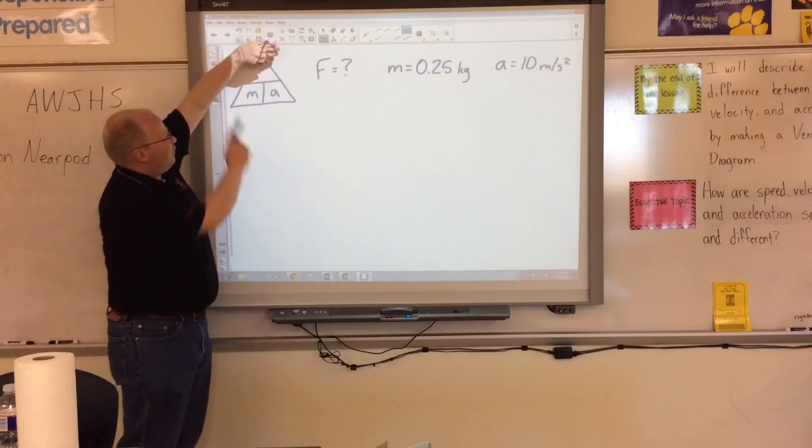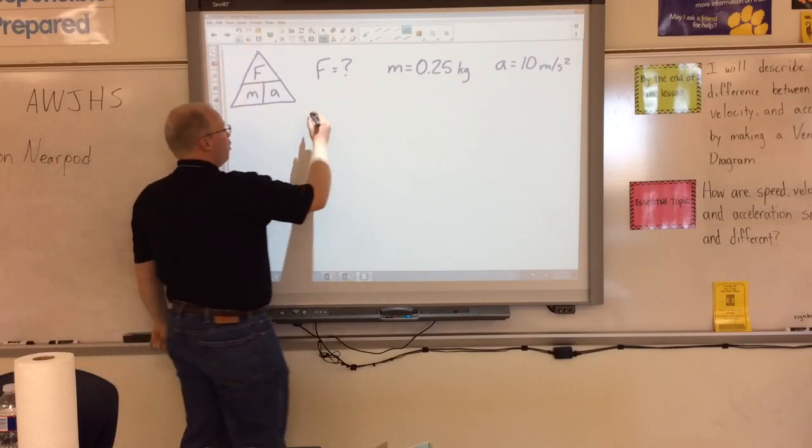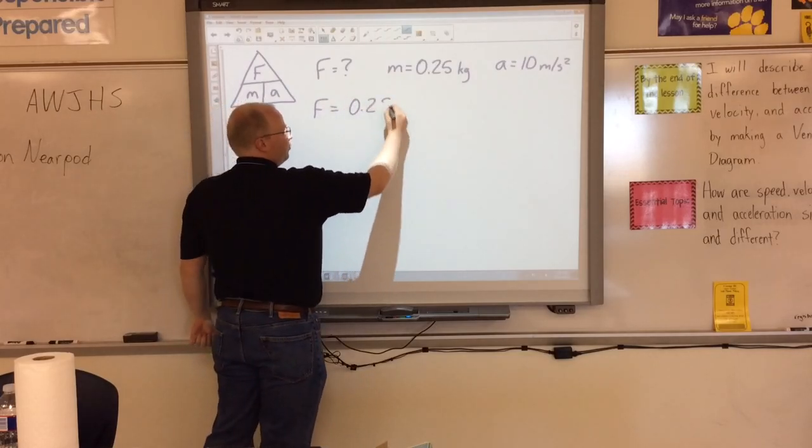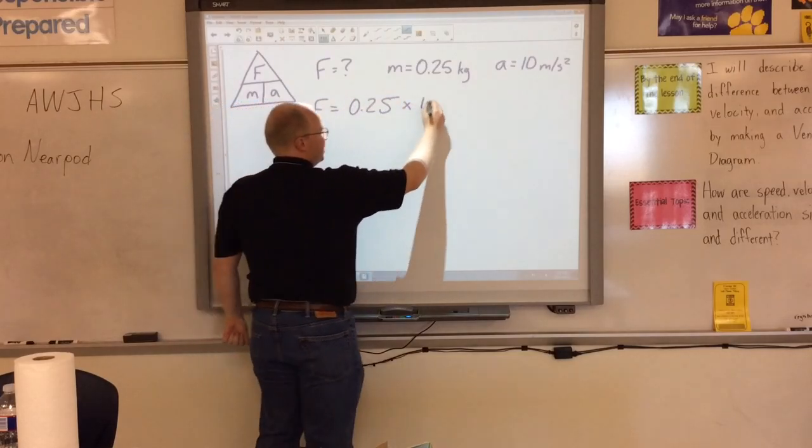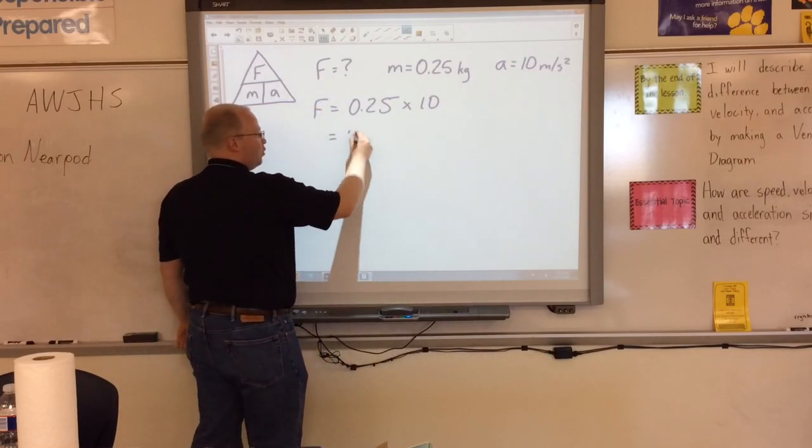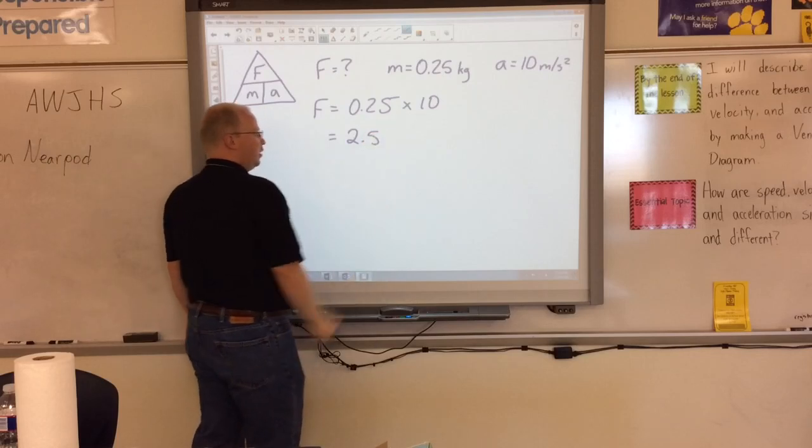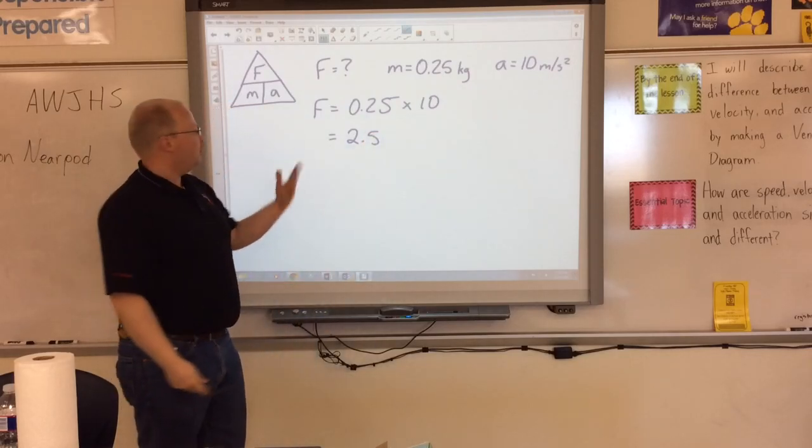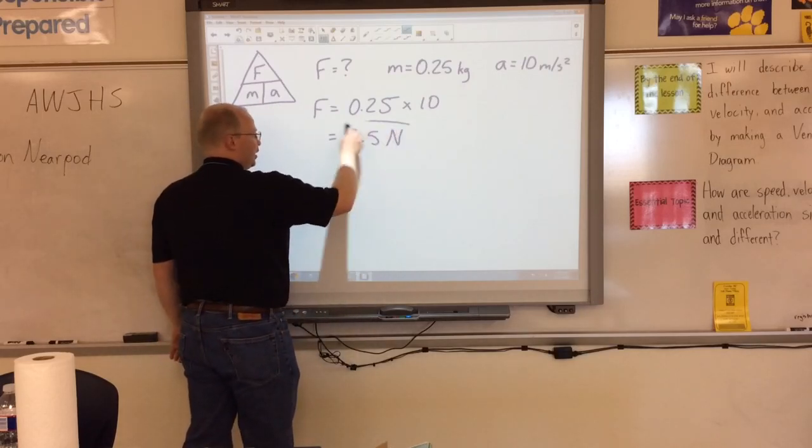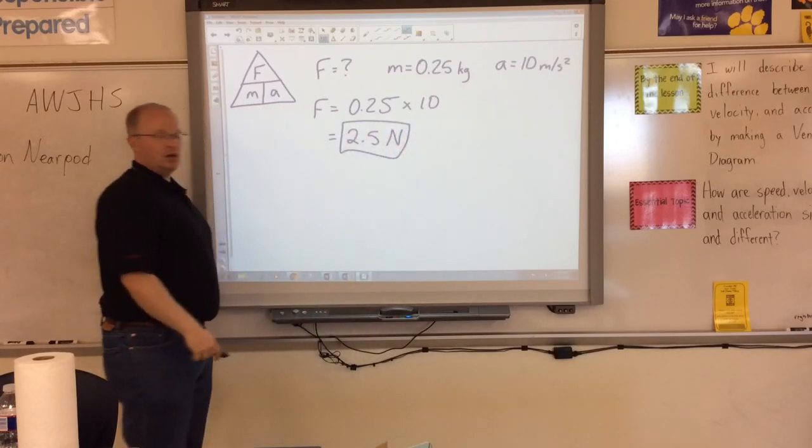That's the force. I have M next to A. So I'm going to multiply. So force equals 0.25 times 10. 0.25 times 10 is going to equal 2.5. That's 2.5 what? Force is always measured in newtons. So this would be my answer, 2.5 newtons.